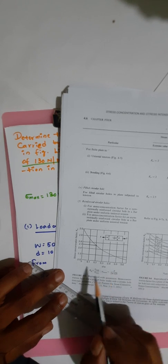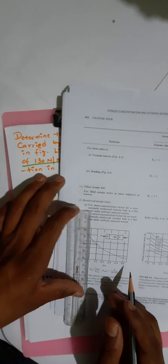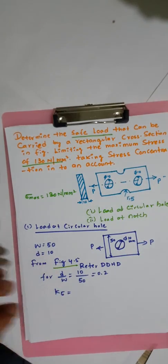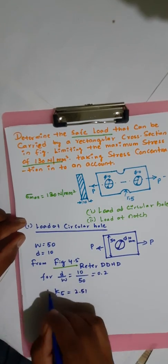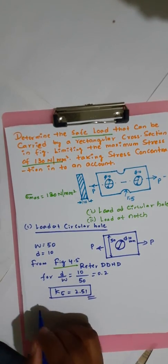To summarize the method: for D/W = 0.2, draw a vertical line coinciding with the curve, then draw a horizontal line to read the Y-axis value. The theoretical stress concentration factor K_sigma is equal to 2.51.